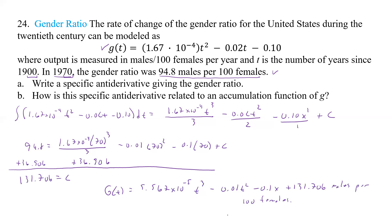And so that's going to be giving us our ratio. Now, how is the specific antiderivative related to an accumulation function of G?